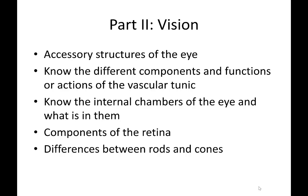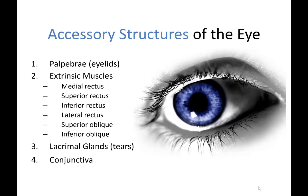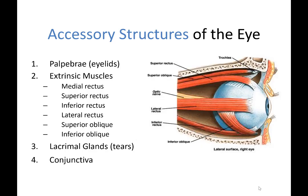We'll go over vision now. The accessory structures of the eye are the components that are around the eye, on top of or supporting the eyeball itself. The palpebra are the eyelids — we have an upper and lower. We have six extrinsic muscles that you need to know.